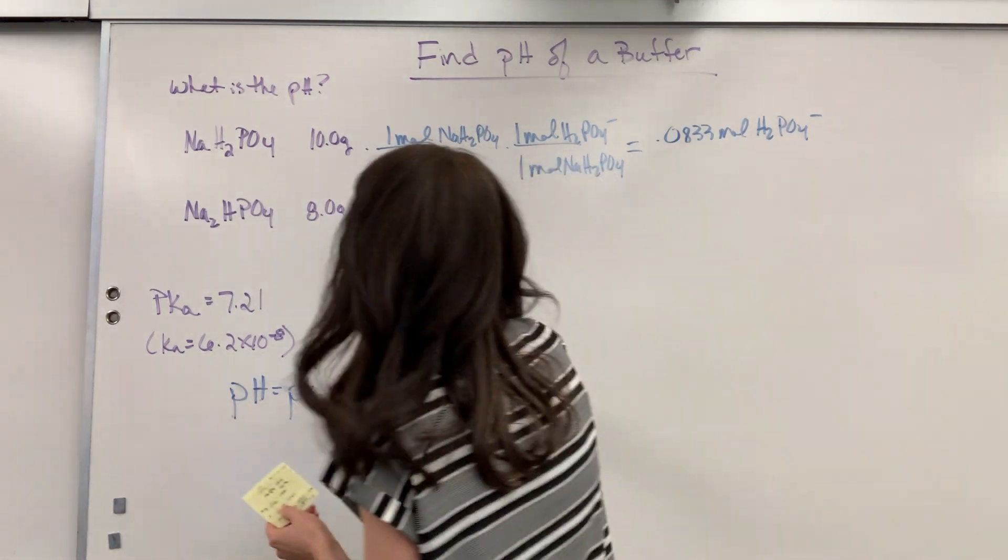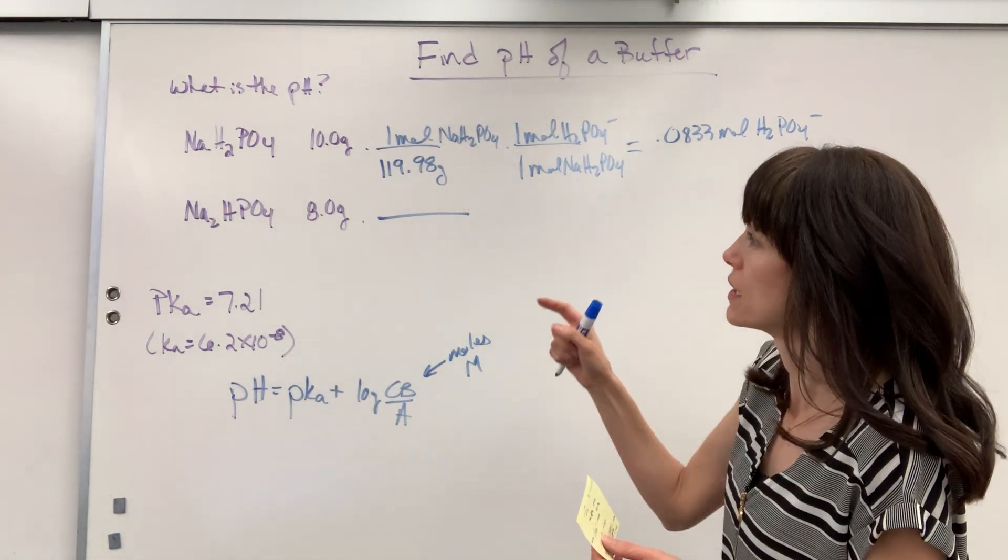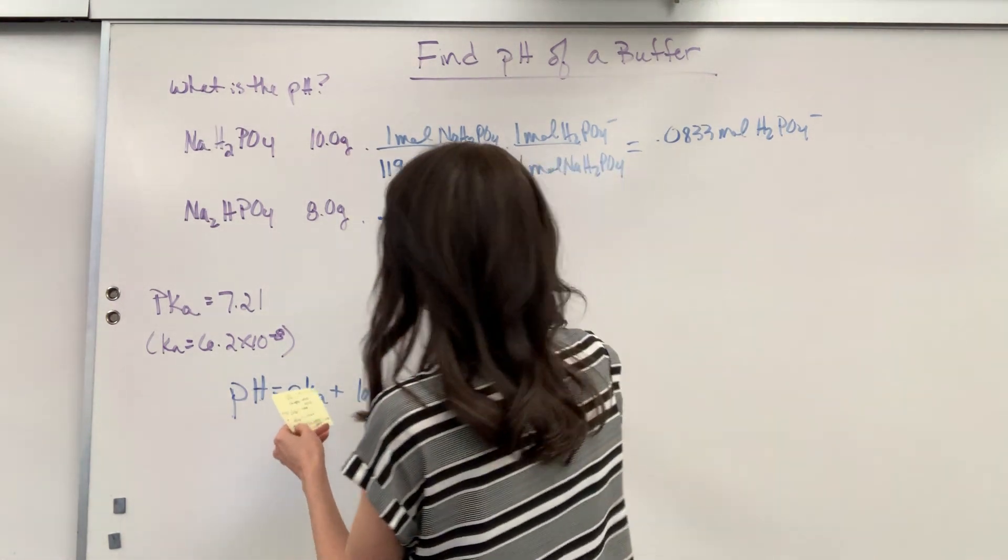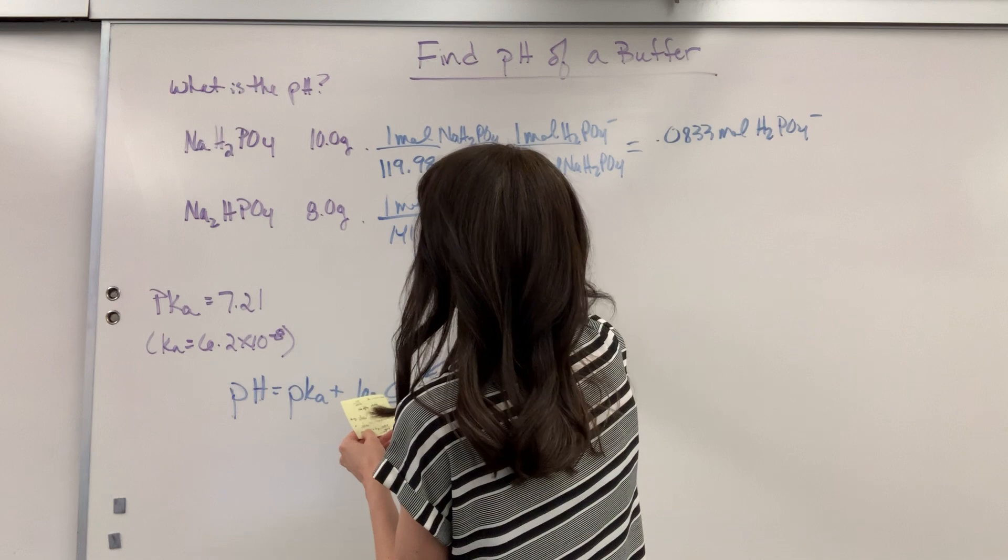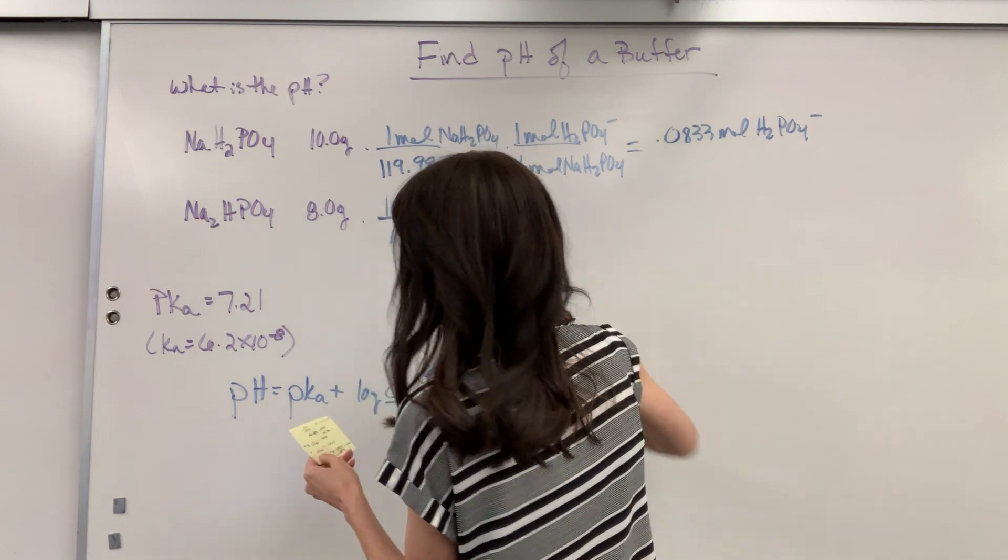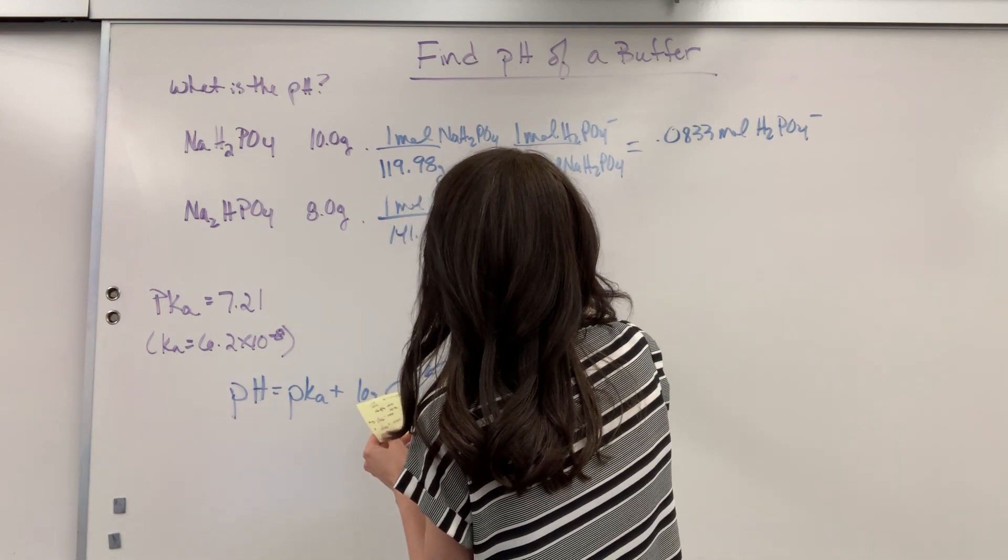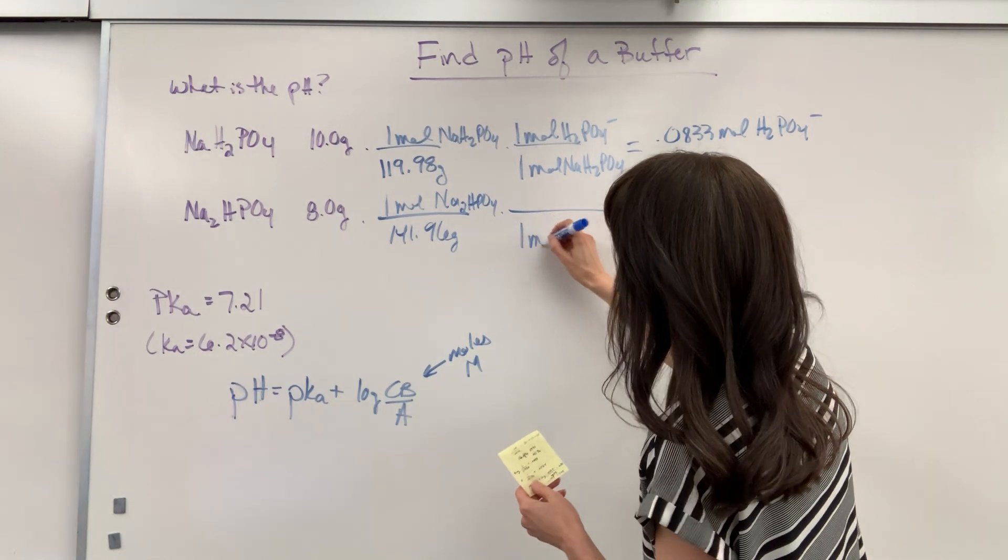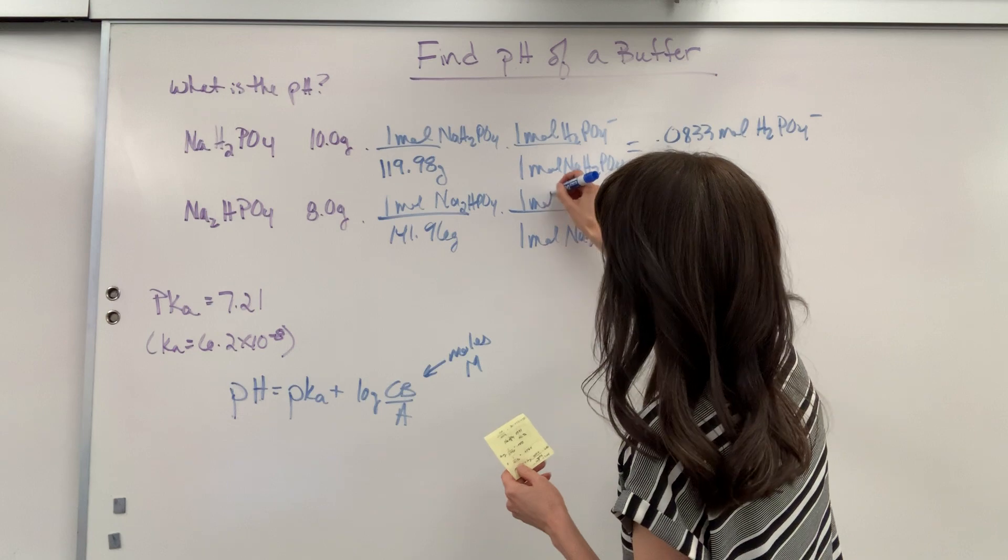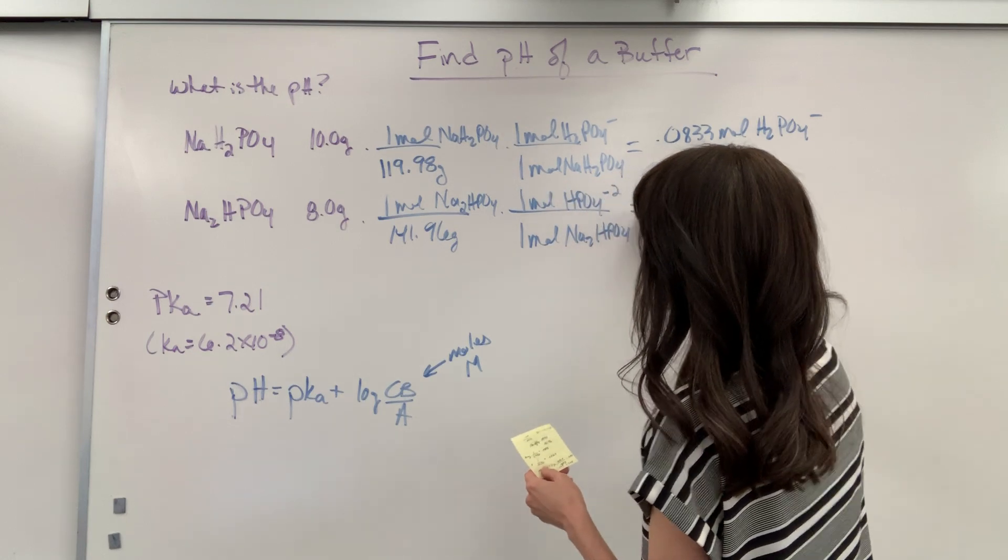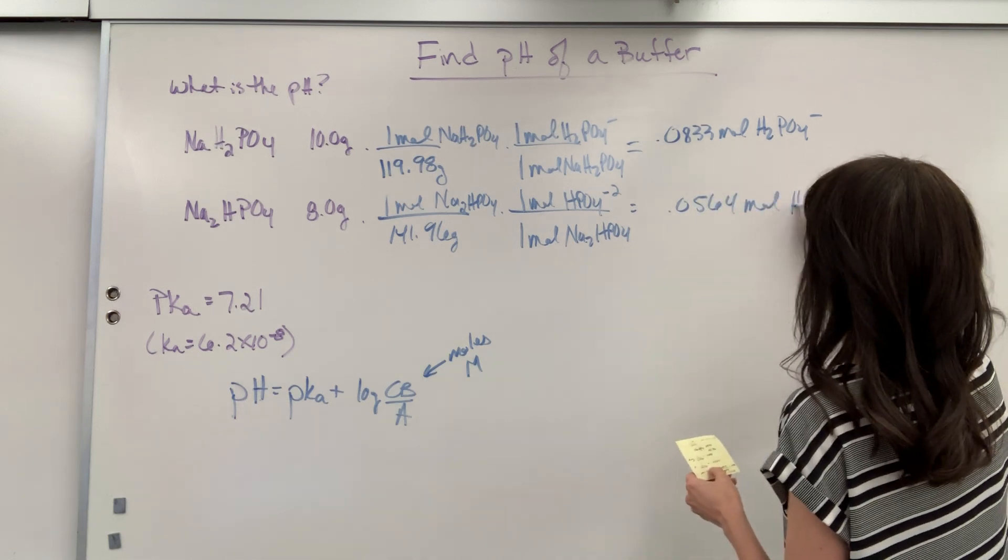All right now we're going to find the moles of just the hydrogen phosphate in this sodium hydrogen phosphate. The molar mass on this is 141.96 grams for every one mole of sodium hydrogen phosphate and then we can walk the same bridge. One mole of this sodium hydrogen phosphate contains one mole of the hydrogen phosphate ion and that is going to give us 0.0564 moles of the hydrogen phosphate.